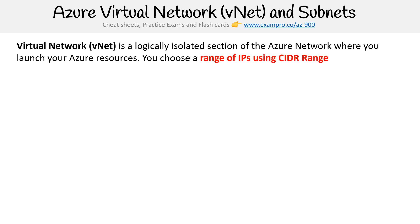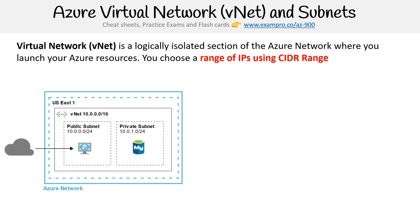A virtual network — VNet — is a logically isolated section of the Azure network where you launch your Azure resources. When you create a virtual network, you have to define a certain amount of IP addresses that you're going to use, which we call a CIDR range. We'll come back to that in a moment.